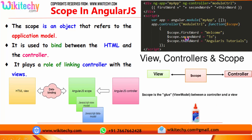Next, I am going to talk about scope. A scope is an object that refers to the application model. It is used to bind the HTML and the controller. In the controller you have your data which is placed in scope, and you display it in the HTML view. Binding your controller and the view is done using scope — it plays the role of linking the controller with the views.